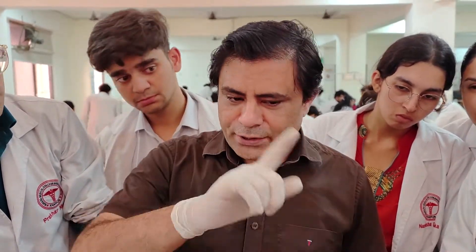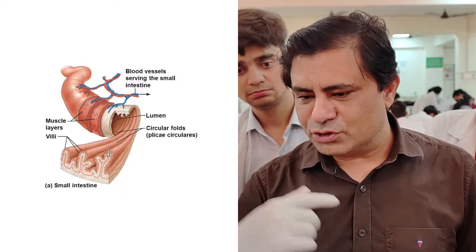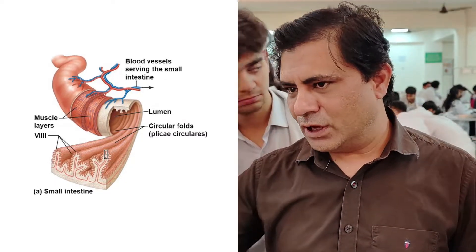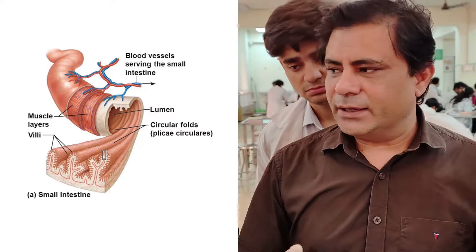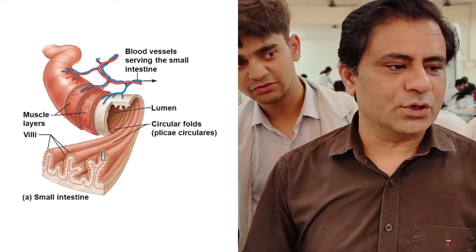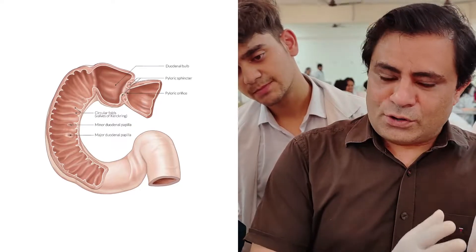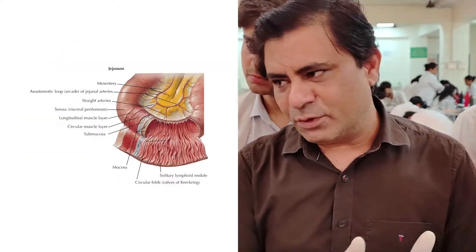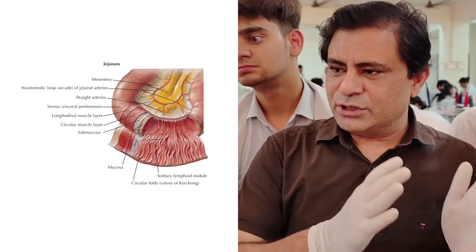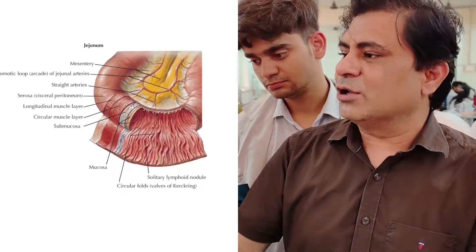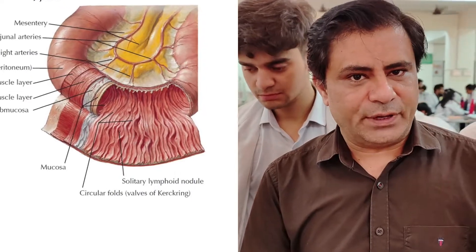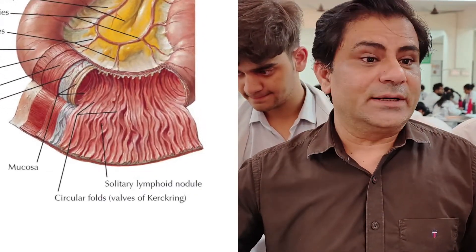There are transverse circular folds called plicae circulares, also known as the Valves of Kerckring. These Valves of Kerckring are taller in height and more densely placed in the duodenum, then in the jejunum. From proximal to distal, the height of these folds keeps decreasing and the density also keeps decreasing. These are fixed mucosal folds — if you stretch them, they will not disappear. These mucosal folds are not seen in the terminal portion of the ileum.